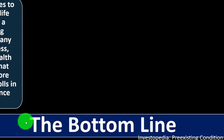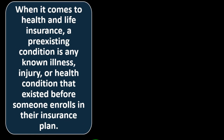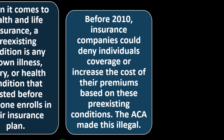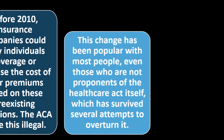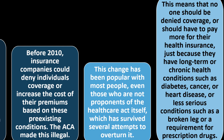So what's the bottom line — what does it mean to me? When it comes to health and life insurance, a pre-existing condition is any known illness, injury, or health condition that existed before someone enrolls in their insurance plan. Before 2010, insurance companies could deny individuals coverage or increase the cost of their premiums based on these pre-existing conditions. The ACA made this illegal. This change has been popular with most people, even those who are not proponents of the healthcare act itself, which has survived several attempts to overturn it. This means that no one should be denied coverage or have to pay more for their health insurance just because they have long-term or chronic health conditions such as diabetes, cancer, or heart disease, or less serious conditions such as a broken leg or a requirement for prescription drugs.